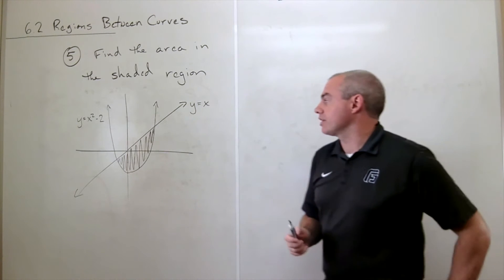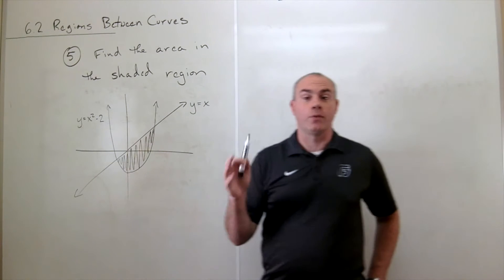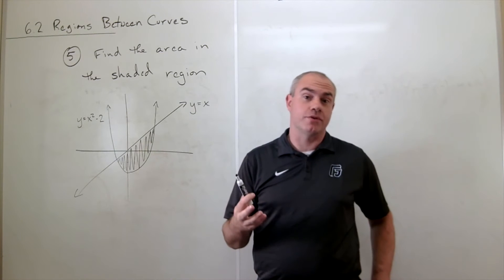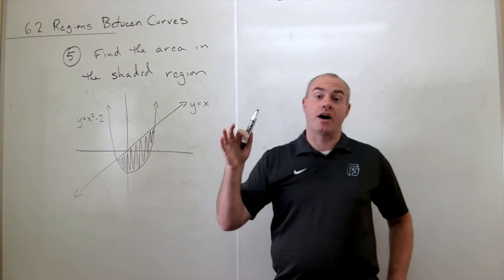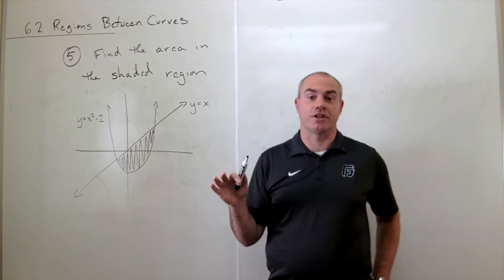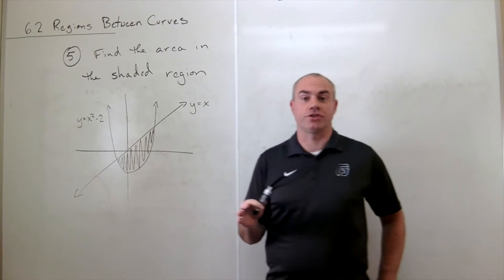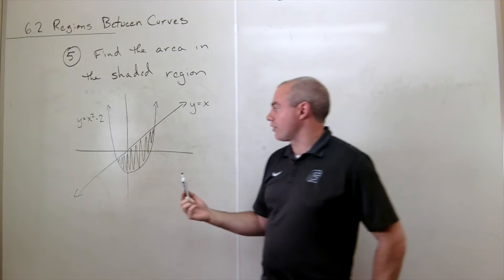So the way that we're going to do this is, as you know, the way that we find the area between two curves is we integrate the top function, whatever the top function is, minus the bottom function over the region which we're interested.